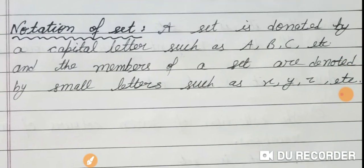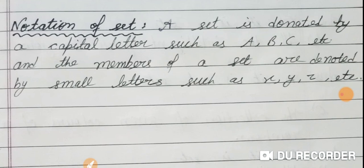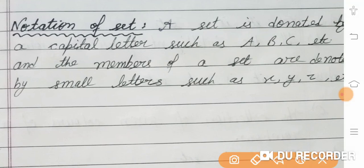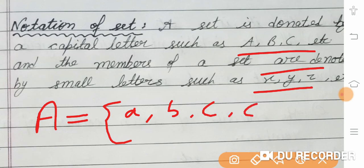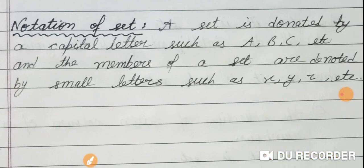Now, the notation of the set — how we can denote or represent the set. We can represent the set by alphabetical capital letters A, B, C, etc., and the members or elements of the set are represented by small letters. For example, suppose you have set A, it is represented as A = {a, b, c, d}. So A is the set which contains elements a, b, c, and d.